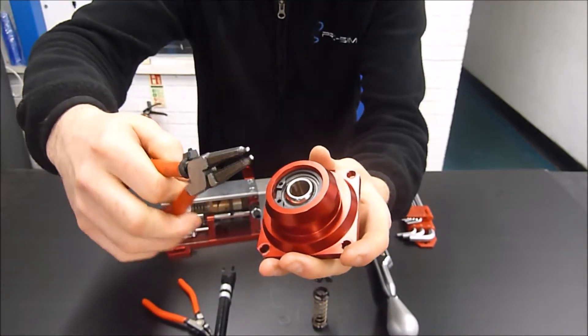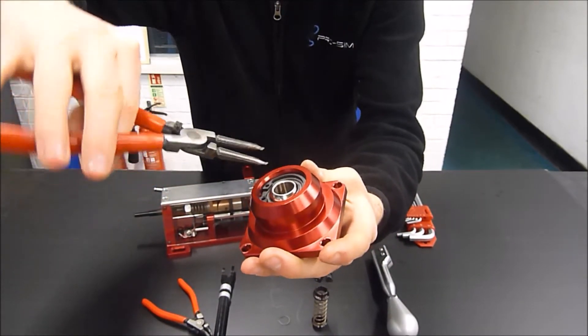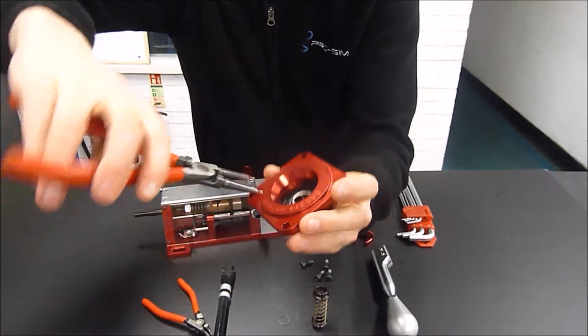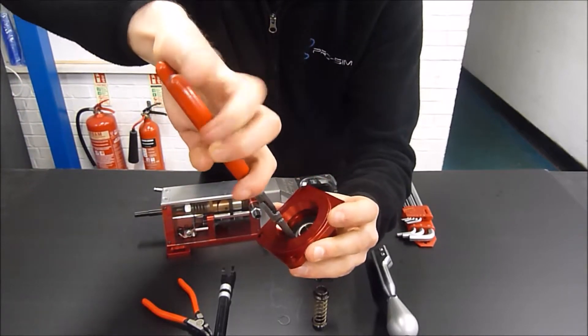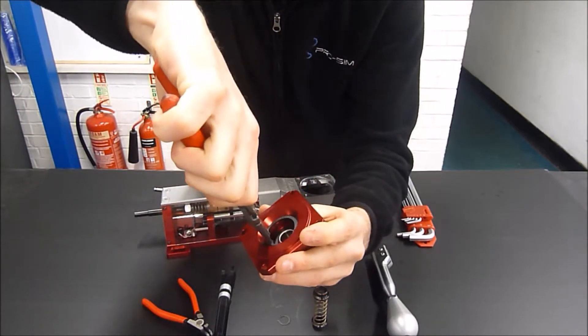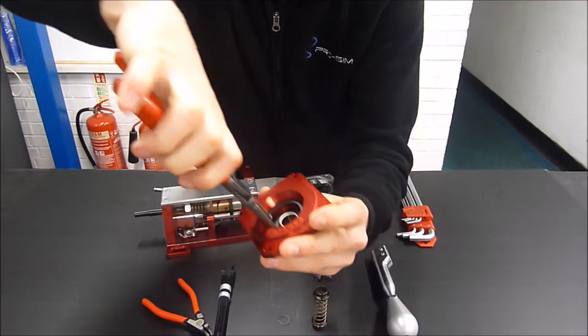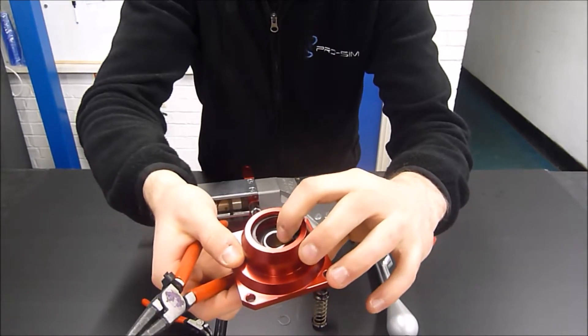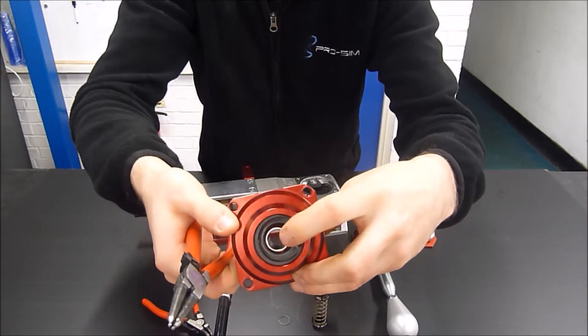So with another set of circlip pliers, we need a larger set and internal ones. I go for the bottom one first because that's easier. So squeeze it in, move it to the next groove up which is there. Once that circlip is in, the bearing will drop to the bottom when you turn it over, and if not just give it a little push to push it to the bottom.